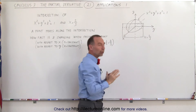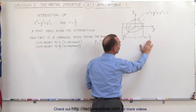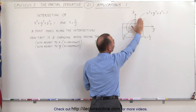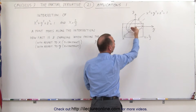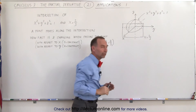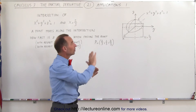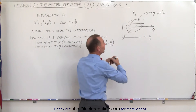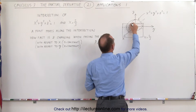We also have a plane. The plane is x equals two-thirds, which means the plane is parallel to the y-z plane and two-thirds of the unit in front of the origin in a positive direction. You can see that that plane will intersect the sphere.